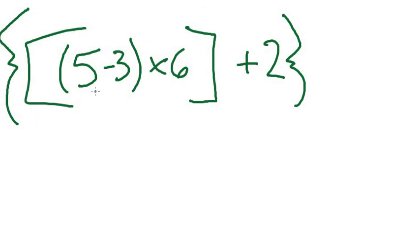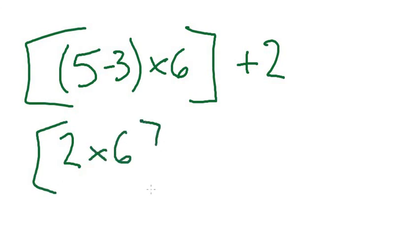which is going to be those, and I would continue on from there. So that's how you work with that. So start with the parentheses. 5 minus 3 is 2. Let's continue this. 2 times 6 is 12 plus 2. That's how you solve it.